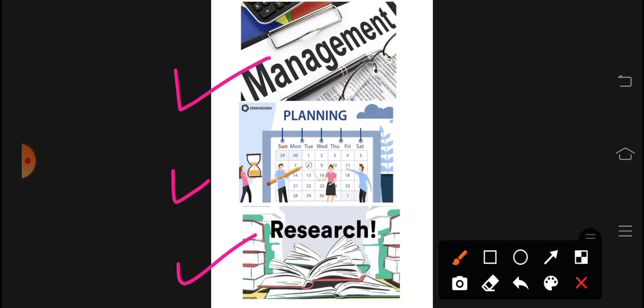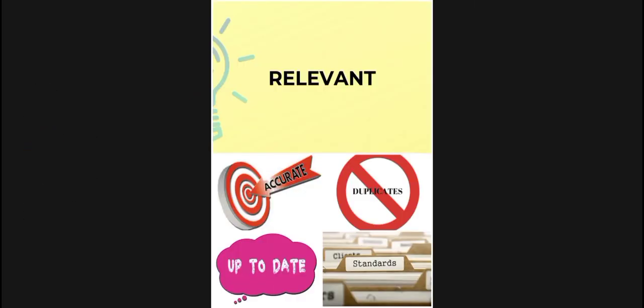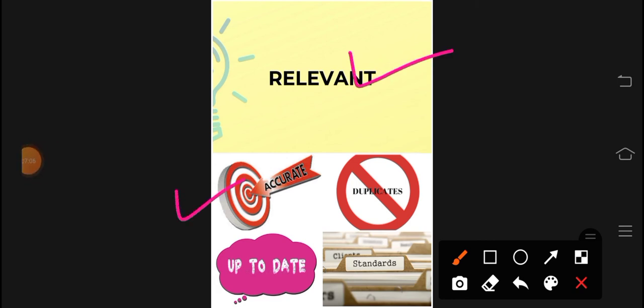A good Health Management Information System should have relevant information, be accurate with no false information or duplicates, be up-to-date, meet standards, be population-based, and be problem-oriented so that problems are discussed. Data collection instruments should be appropriate, and confidentiality must be maintained — if you have any information, keep it confidential and do not share it with anyone.